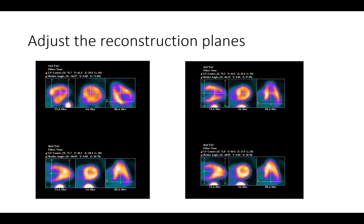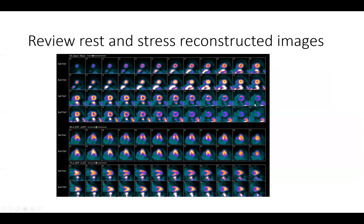The next stop is to do the reconstruction images. Immediately here on the left hand side you can see in the stress images on top there are issues with the reconstruction where the axis of the heart is tilted. With a very simple rotation you can end up with the corrected images on the right — you click the processing button and then you will get these images.